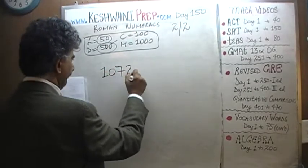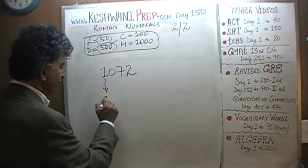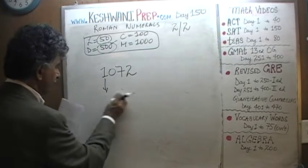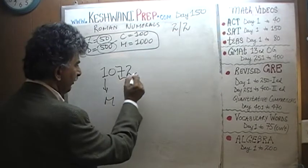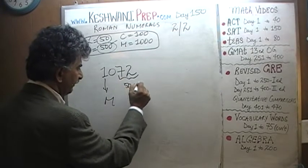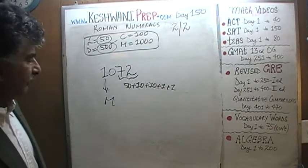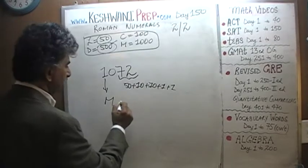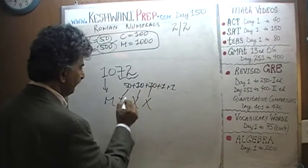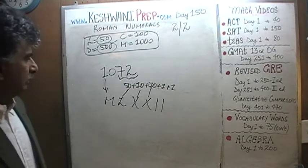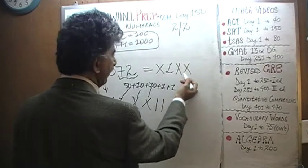One thousand and seventy-two. How do we write one thousand? One thousand is simply M. Then seventy-two: we write that as fifty plus ten plus ten plus ten plus one plus one. This is the only way they knew of writing seventy-two. Fifty is L, then X plus X plus X for thirty, then I plus I for two. There is your one thousand and seventy-two.